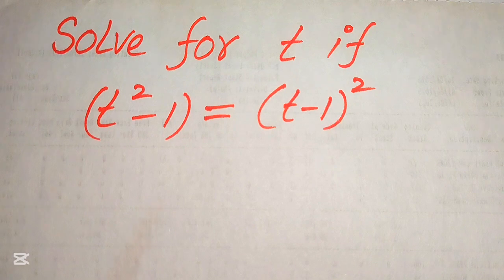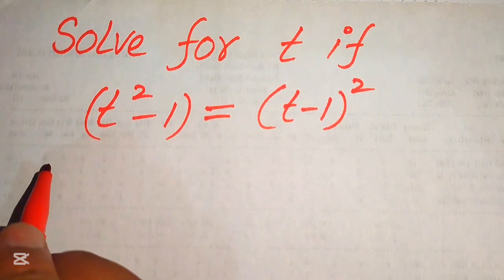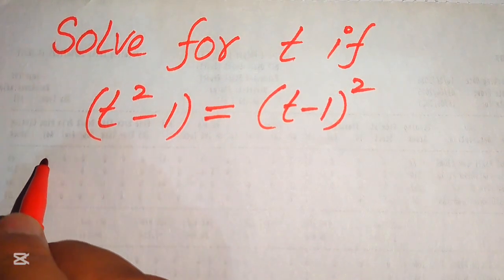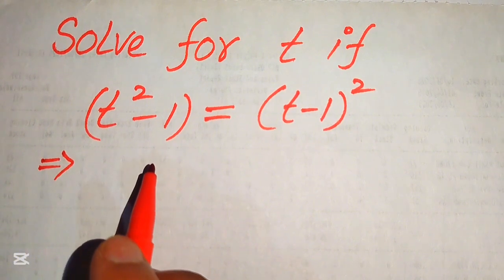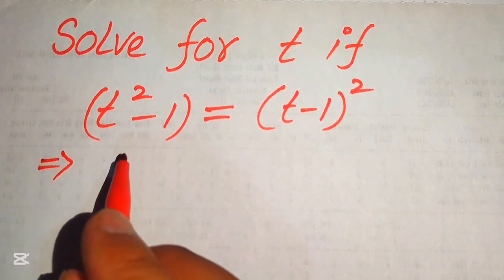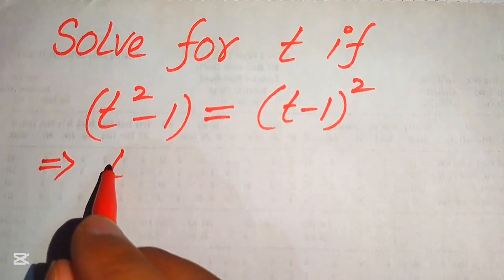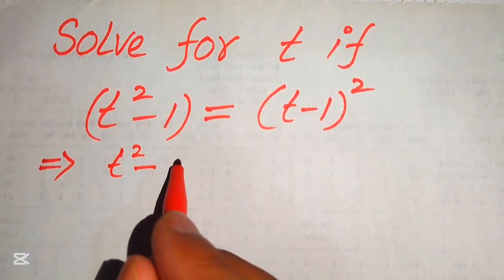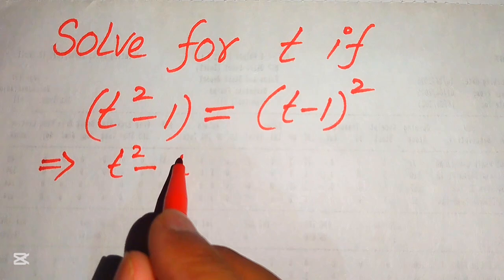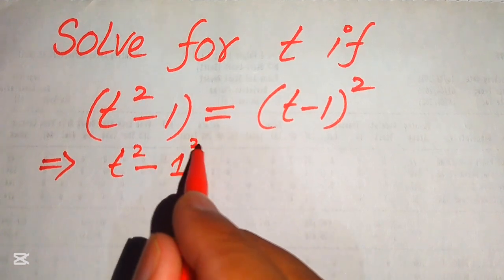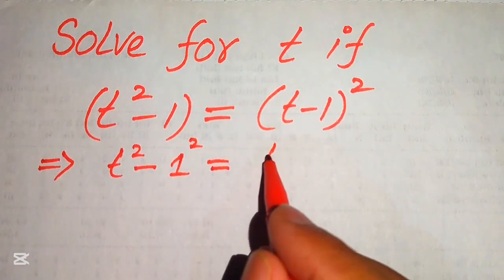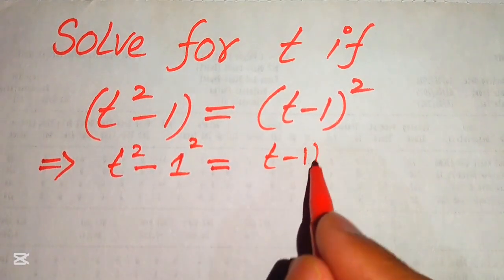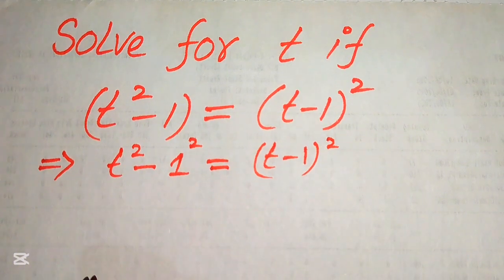The very first step we are going to do is rewrite the given equation as t squared minus 1 squared equals t minus 1 whole square.